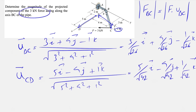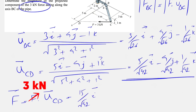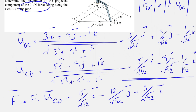Since we know from the question that the force F is 3 kilonewtons, we know that F in vector form will be F times the unit vector U_CD. We simply have 3 times that unit vector, so for the i component we get 15/√42, and for j we get 12/√42.